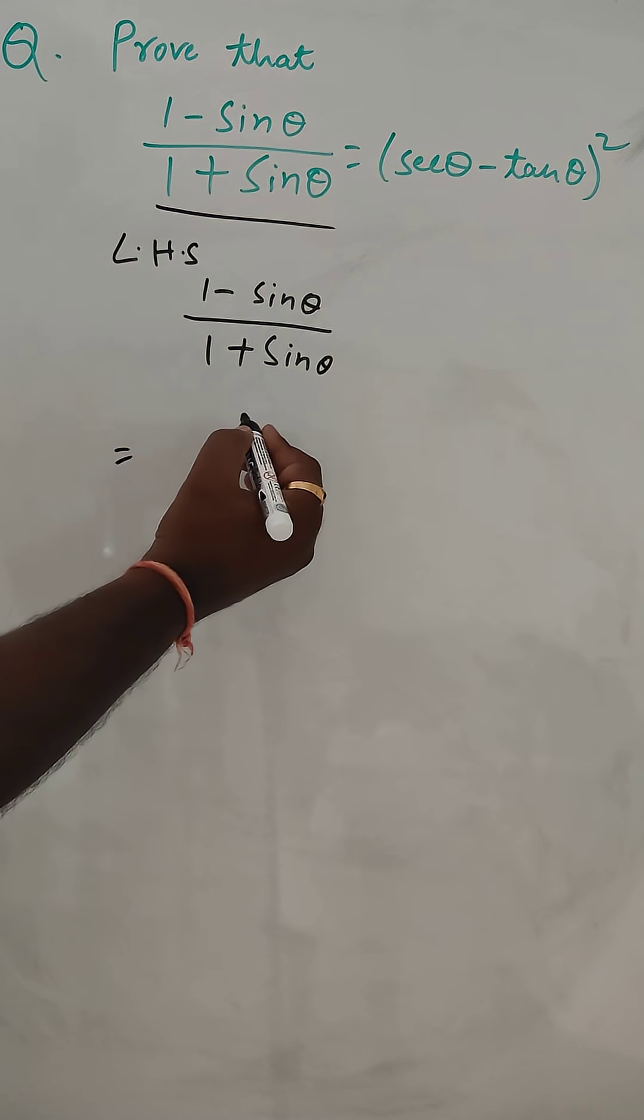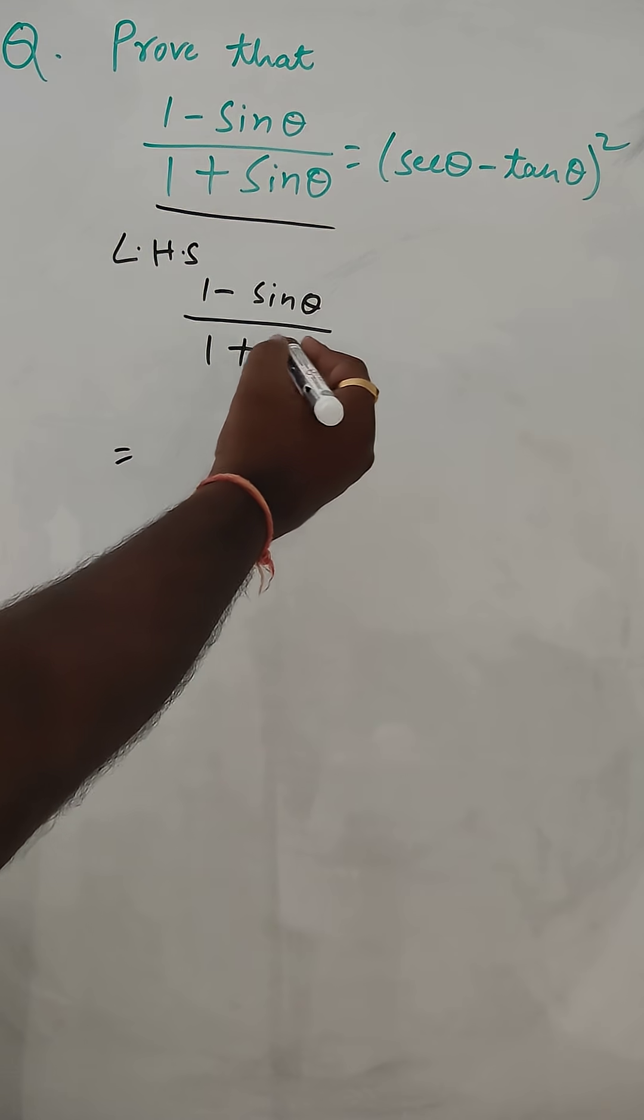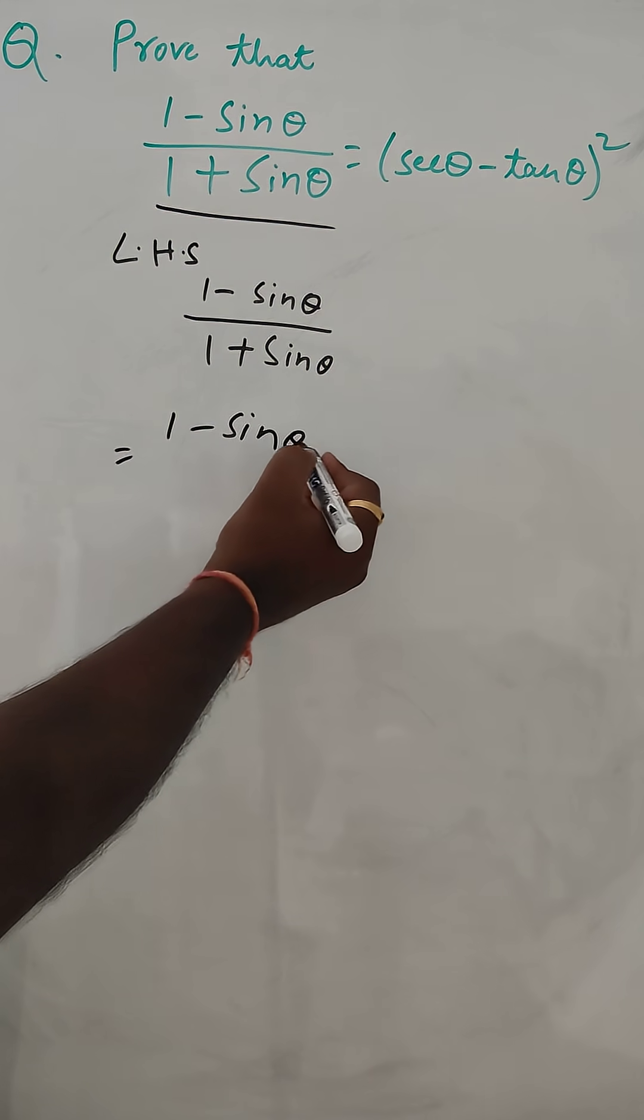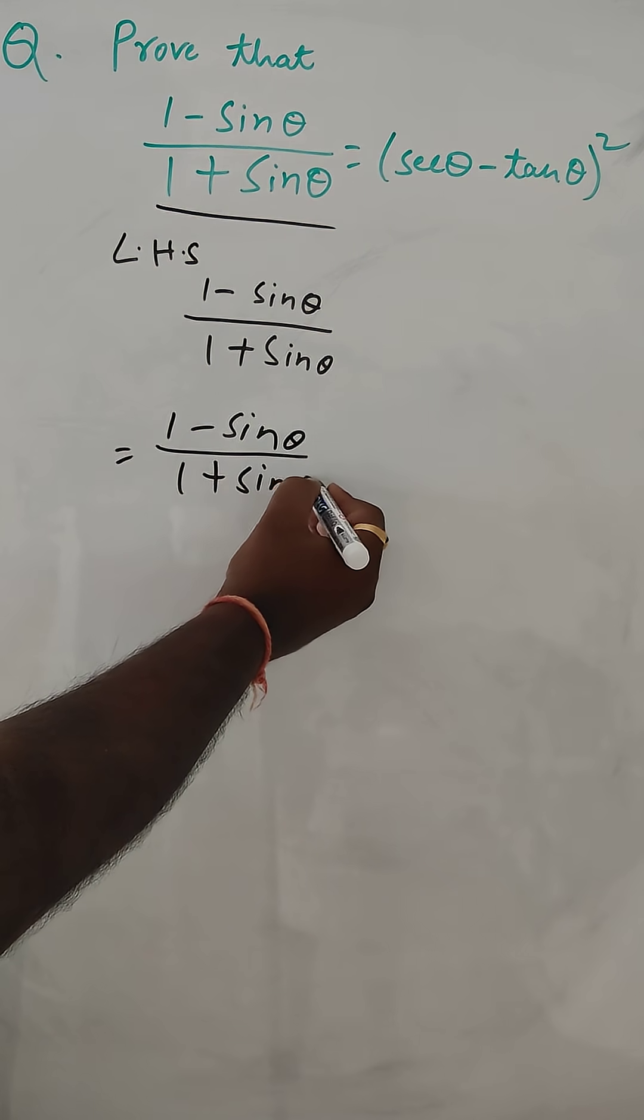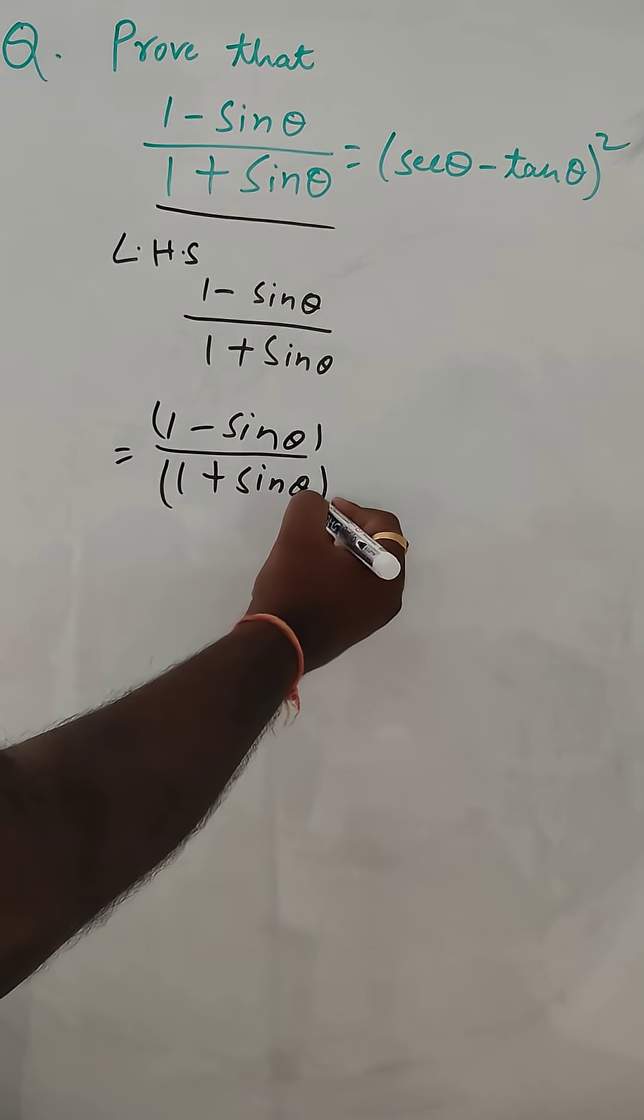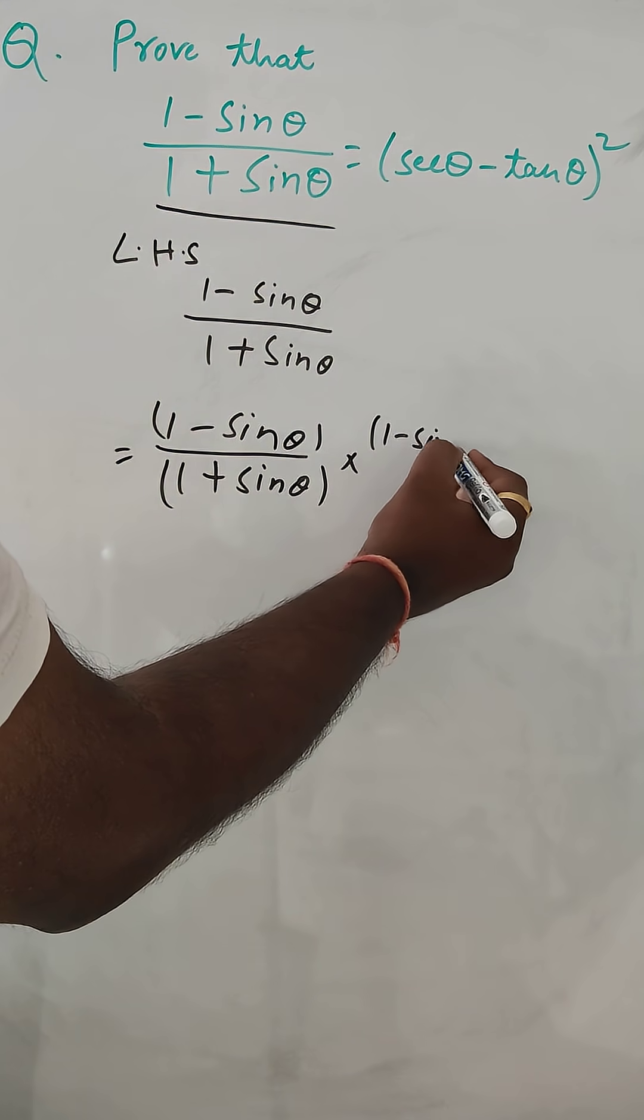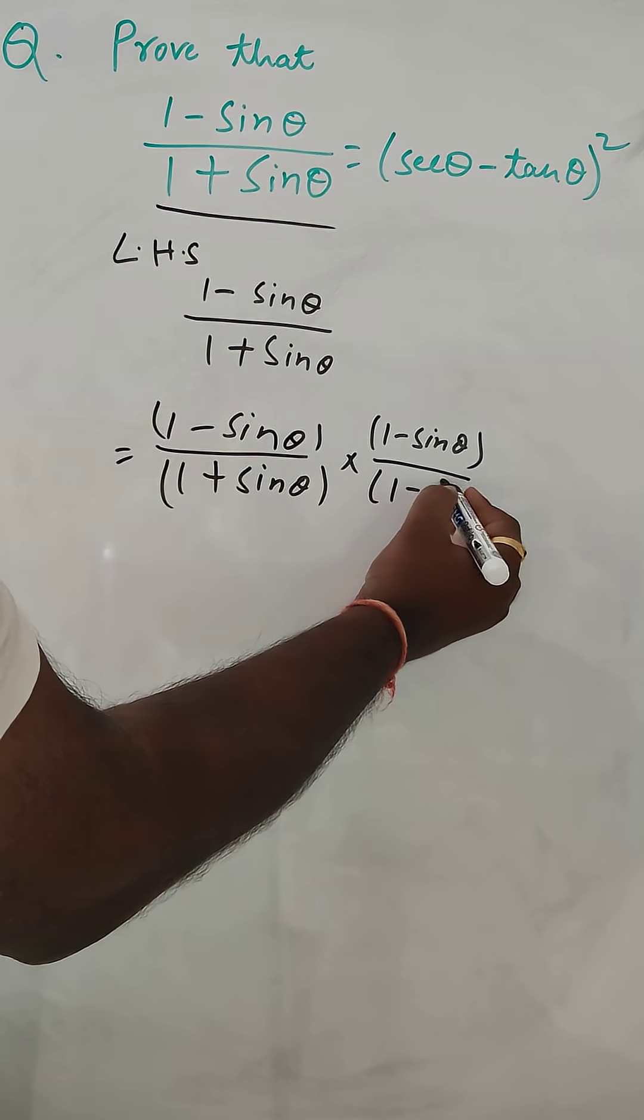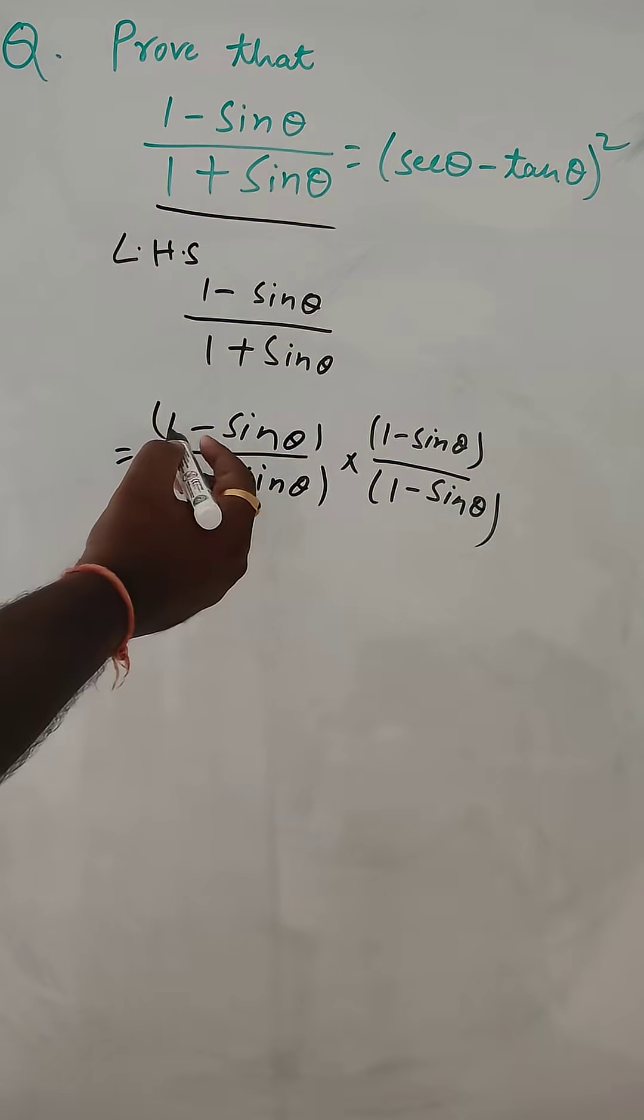We can do multiplication of same thing by doing the rationalization. So, multiply by 1 minus sin theta in numerator and 1 minus sin theta in denominator, correct.